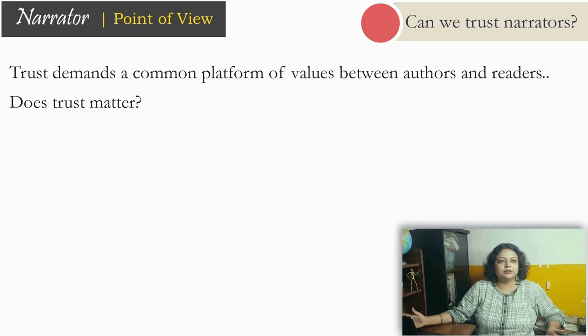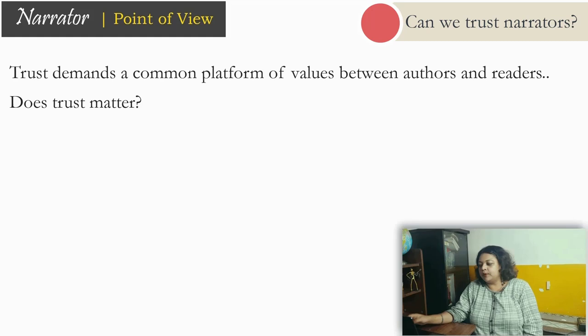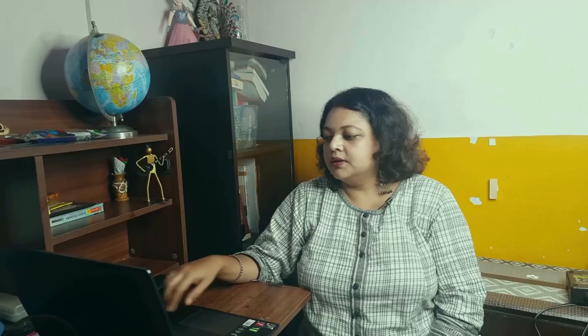To summarize, today we have studied omniscient narration, limited narration, first person narration, second person narration, third person narration, and the difference between reliable and unreliable narration. Out of these, if you were to write a novel or a story, which narrative mode would you prefer? Tell me in the comment section. If you have already tried writing stories, do also share that. See you in my next video, which will also cover a different literary term — give me a suggestion in the comment box about which literary term I should take up next.